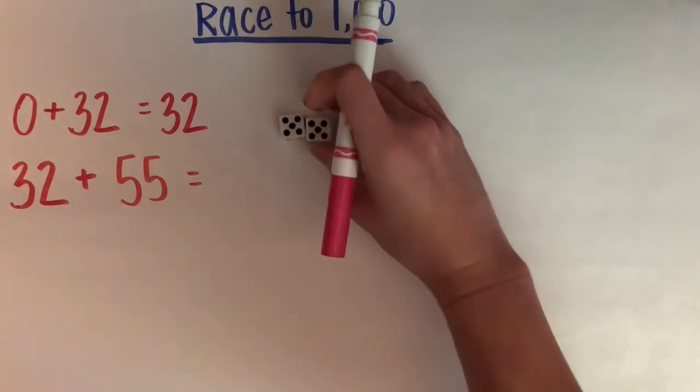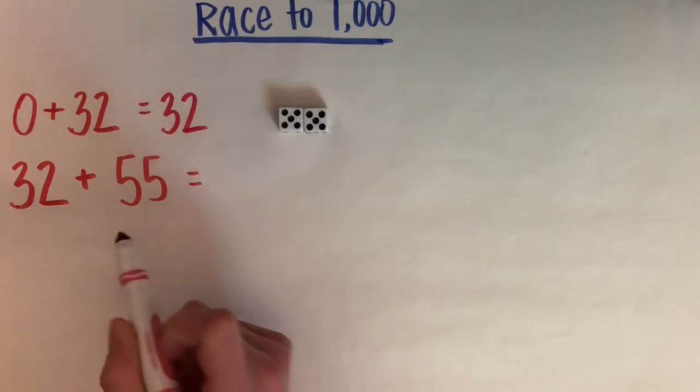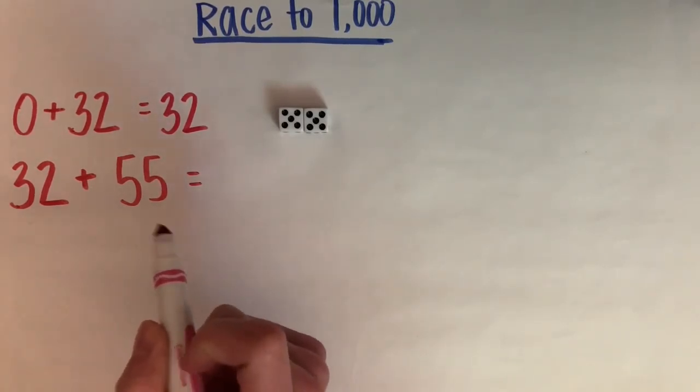For this second equation I'm going to use partial sums. When we use partial sums we're adding by place value.